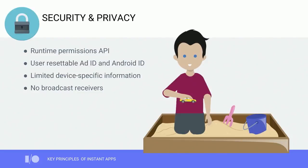Let's talk about security and privacy. With installable apps, apps get access to the user's device when the user goes through an explicit installation flow. At that point, the user is granting your app access to your device. You also have the ability to ask the user for permissions to access private data like location. Now, with Instant Apps, they're just launched from a URL, so there's no explicit installation flow and hence no upfront consent.